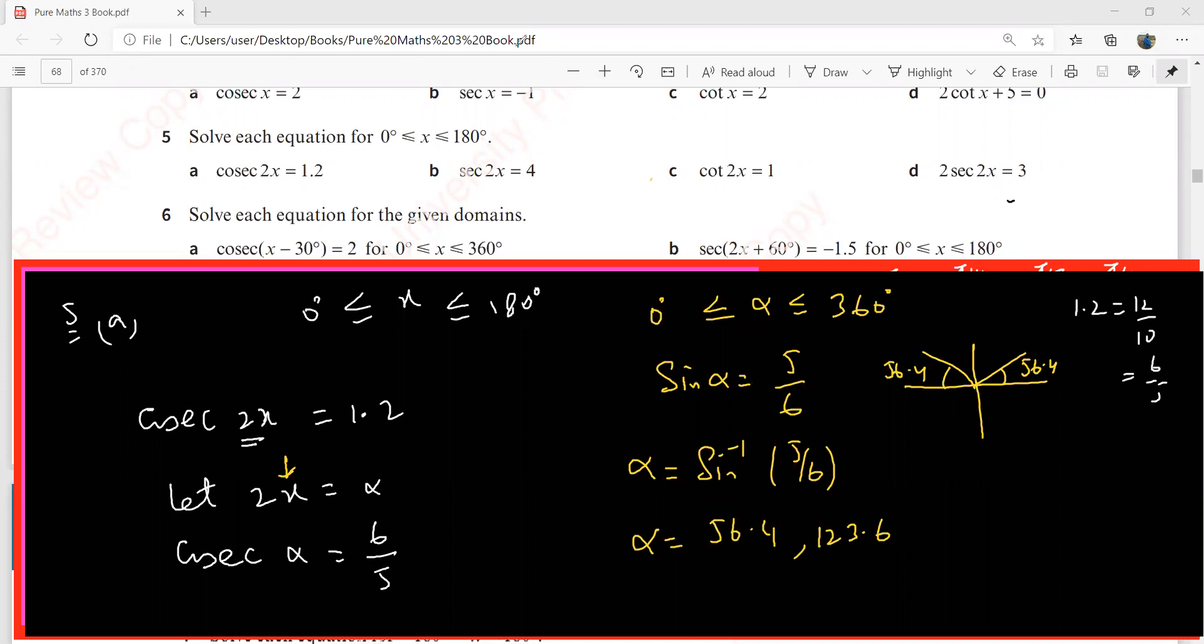My alpha is going to be 56.4, and then 180 minus this, which is 123.6. We were looking for the values of x, and we've taken 2x as alpha, so x is going to be alpha by 2. These are your answers: 61.8 and 28.2. These are the two solutions of the equation cosecant 2x equals 1.2.